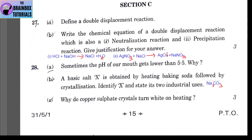Number C: why do copper sulfate crystals turn white on heating? Copper sulfate crystals contain water molecules — that is, water of crystallization — which is why they are blue in color. When they are heated, the water molecules evaporate and they become white in color.